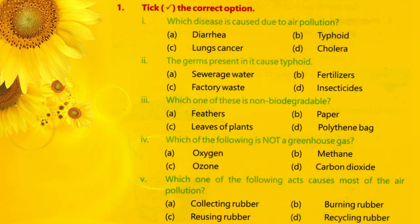Question 3: Which one of these is non-biodegradable? Options: A. Feathers, B. Paper, C. Leaves of plants, D. Polythene bags. Correct option is D — Polythene bags.